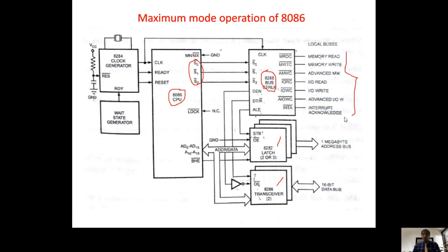Accordingly, 8288 activates transceivers, latches, and control signals. The clock frequency range of 8288 and 8086 are synchronized with the same value, and at the same rate 8288 performs operations based on the commands given by the processor.